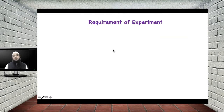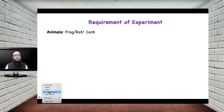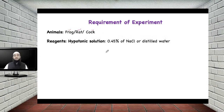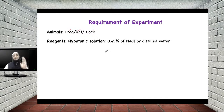Let us see the requirement of this experiment to study the action of saline purgative on the intestine. The first requirement is the animal. To study this experiment you can use animals like frog, rat, or cock. You can use the intestine of either frog, rat, or cock — for cock you can bring the intestine from the slaughterhouse. Hen ileum can be brought and on that ileum or smooth muscle tissue you can also perform the experiment. The second requirement is reagents. Since saline purgative is hypertonic in nature, we will compare its effect with hypotonic solution and isotonic solution.